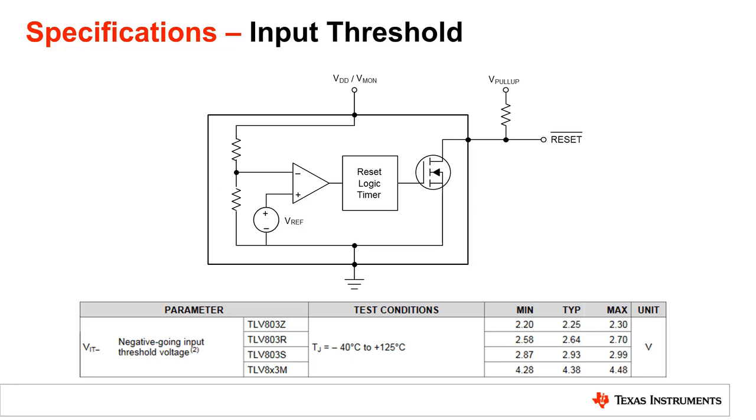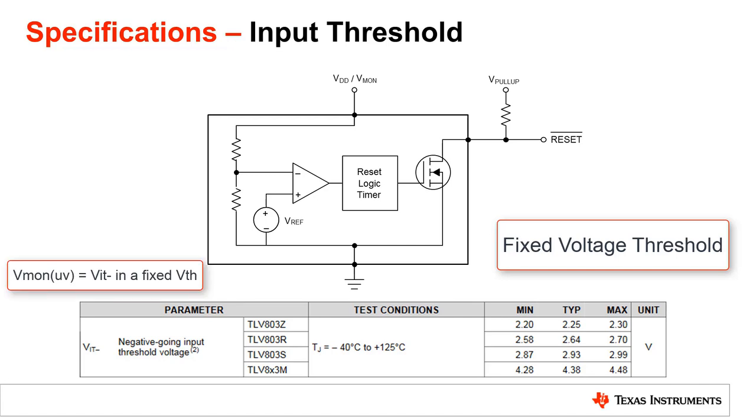There is another class of devices that generate its monitored voltage off of the input voltage VDD and utilize internally trimmed resistors. We call these devices supervisors with a fixed voltage threshold, or fixed VTH. For simplicity, in the datasheet of fixed voltage threshold supervisors, VmonUV is directly referred to as VIT-, as shown in the example above. These supervisors will come with popular predetermined voltage threshold options to suit the system requirements. These supervisors are generally utilized if the user has one specific voltage rail that needs to be monitored. Without the need of external sense ladder, the user can then save on the cost of resistors, as well as reduce the number of discrete components on the board itself.